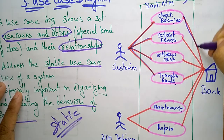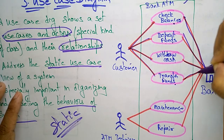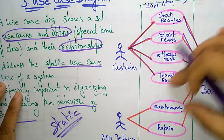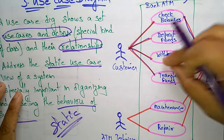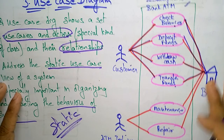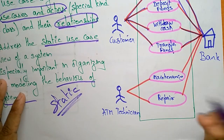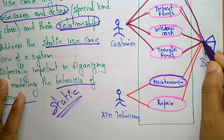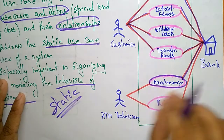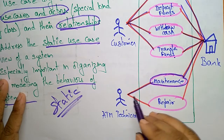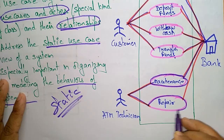When the customer performs operations like withdrawing cash, those updates are stored in the bank. The ATM also needs to be maintained — money is brought from the bank and placed in the ATM center by the technician. If any repair occurs to the ATM machine, the technician informs the bank.